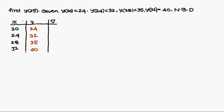Next, you have to construct differences. In Newton forward you write the symbol as delta; in Newton backward you write it as nabla. So 32 minus 24 gives 8; 35 minus 32 gives 3; 40 minus 35 gives 5. Always write the difference in between the two corresponding values.